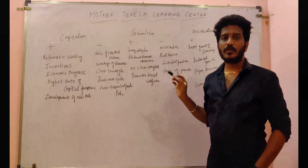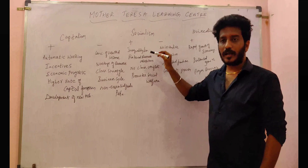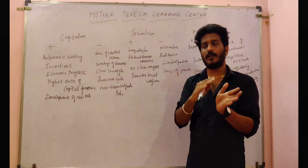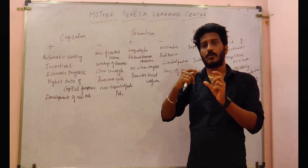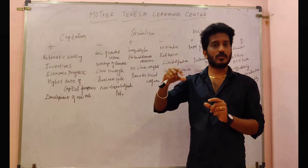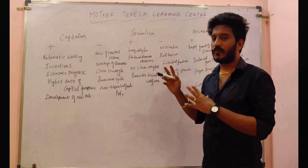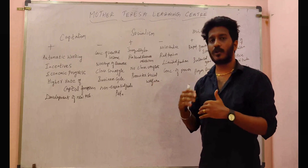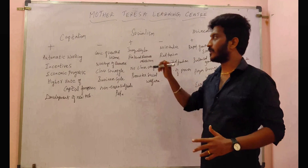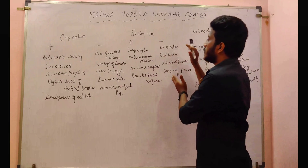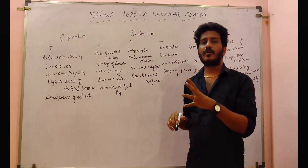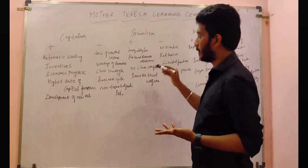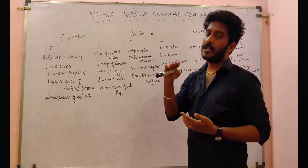Coming to socialism, there is a unique quality. Because government controls things, there is proper resource allocation. There is social welfare promoted. But in socialism, everyone gets incentive equally, so there is a bit of an incentive problem — everyone is on the same scale.